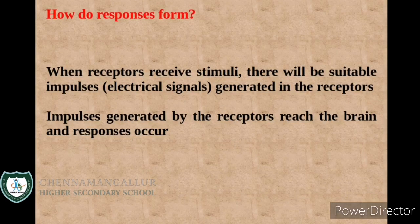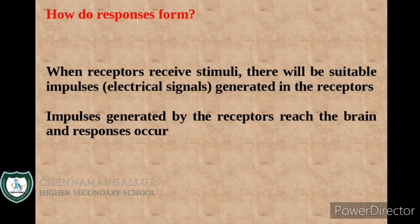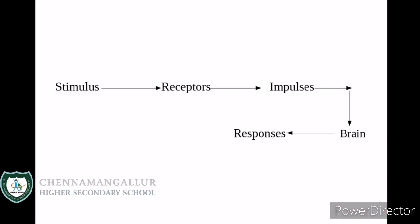How does a response form? When receptors receive stimuli, suitable impulses are generated in the receptors. Impulses are nothing but electric signals. On receiving these stimuli, the suitable impulses generated by the receptors reach the brain and responses occur. Stimulus is received by receptors, impulses are generated, those impulses carry to the brain, and in the brain suitable responses occur.